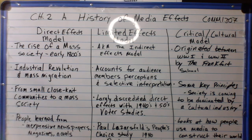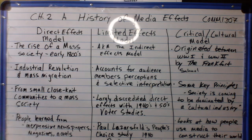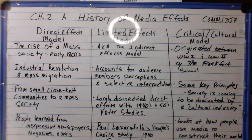Hey everyone, this video is about the history of media effects relative to chapter 2 of 'Living in a Media World.' This is for Communication 1307, Introduction to Mass Communication. The content in this video will also be located in chapter 2, pages 32 through 36. The direct effects model, the limited effects model, and the critical cultural model will be discussed.